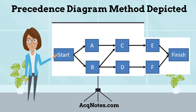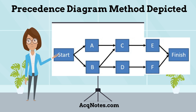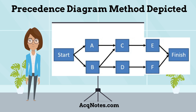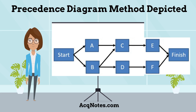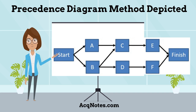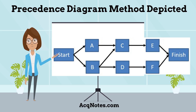How is the precedence diagram method, PDM, depicted? The precedence diagram is depicted by a chart with nodes and their relationships. An arrow connects two nodes to represent an active relationship. It is also called a nodal diagram or network diagram.